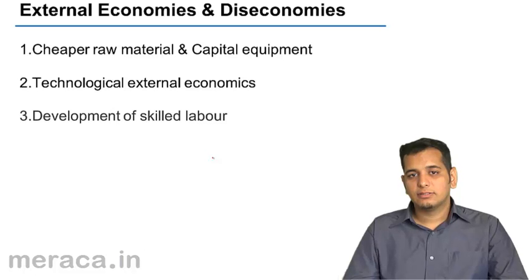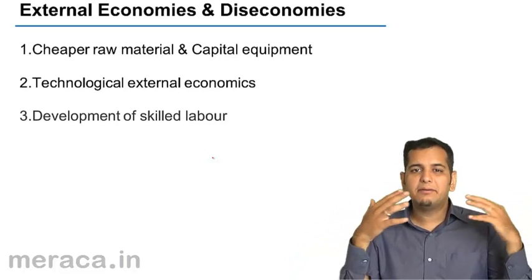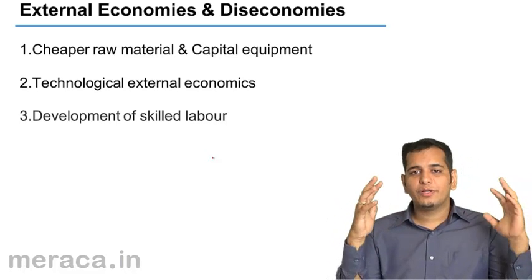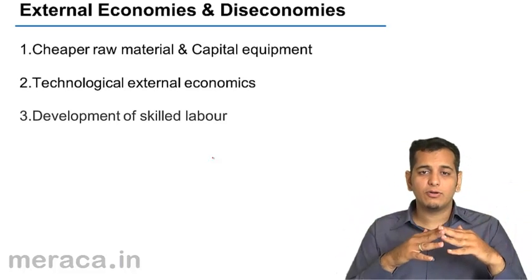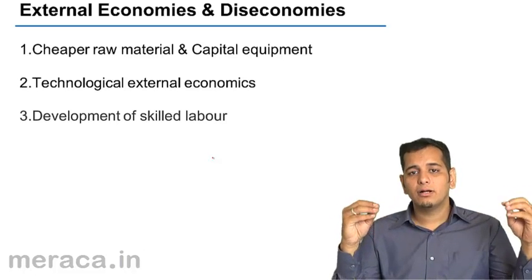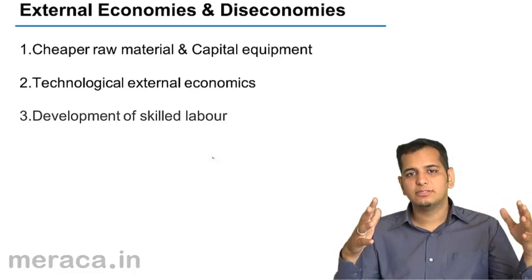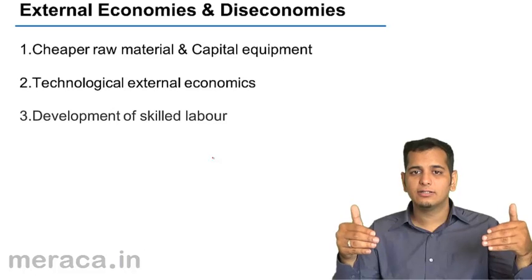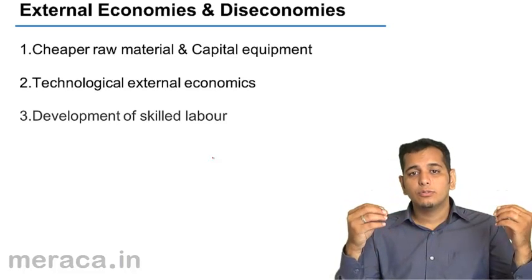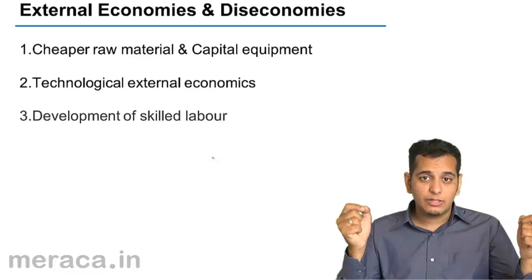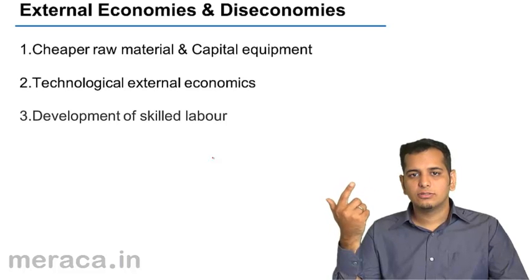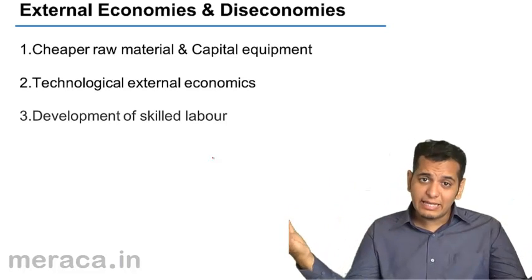Third is development of skilled labor. Let's assume that labor becomes skilled — because of education, training, experience, or any other reason — and the laborers in the country become skilled. What will happen is these laborers, once they become skilled, will automatically increase the productivity of the firm. They can be used for activities or work which require a lot of skill, and hence the cost per unit may decrease or the scale may increase.